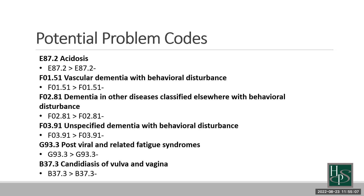The codes we'll see most are the three different dementia codes with behavioral disturbance — vascular dementia, unspecified dementia, and dementia due to other diseases — where the code set is expanding so we can now further specify the behavioral disturbance. For post-viral and related fatigue syndromes, we are seeing those more and more with our post-COVID and long COVID conditions, which is why they've expanded that category. We also now have an actual code for chronic fatigue syndrome, which previously was an R symptom code that didn't recognize chronic fatigue syndrome as having its own etiology.